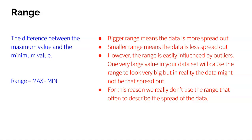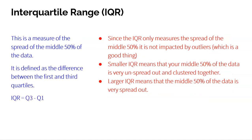You might see range come up, but it's just max minus min. Next up is the interquartile range, known as the IQR. This is the measurement of the spread of the middle 50% of your data. Where range uses the min and the max across the entire data, the interquartile range is the range of just the middle 50%. To calculate the IQR, you take the third quartile minus the first quartile.